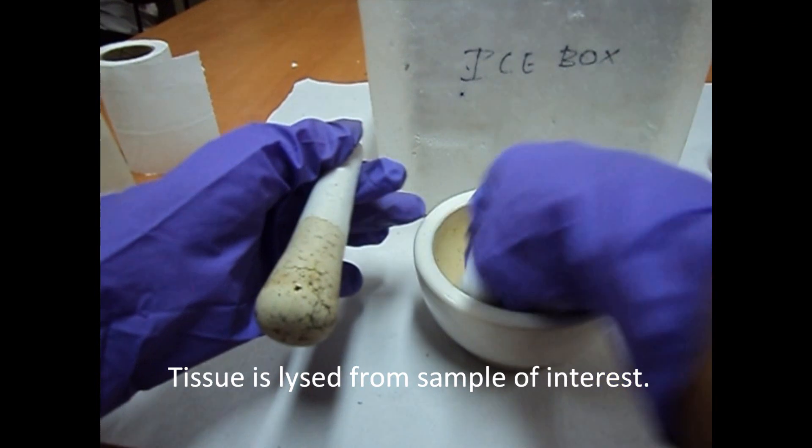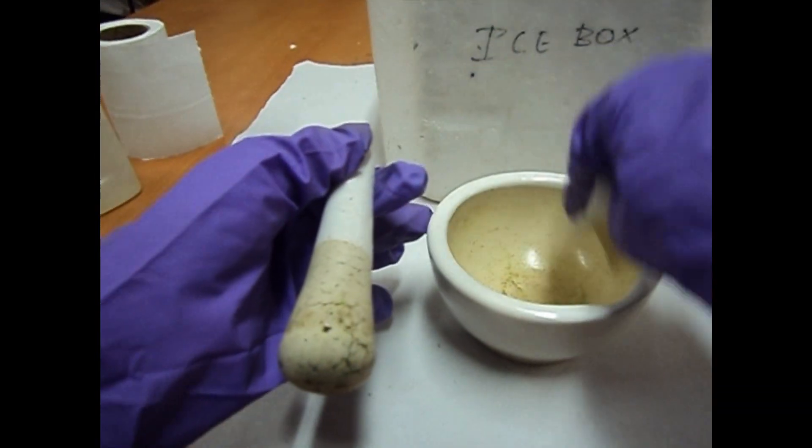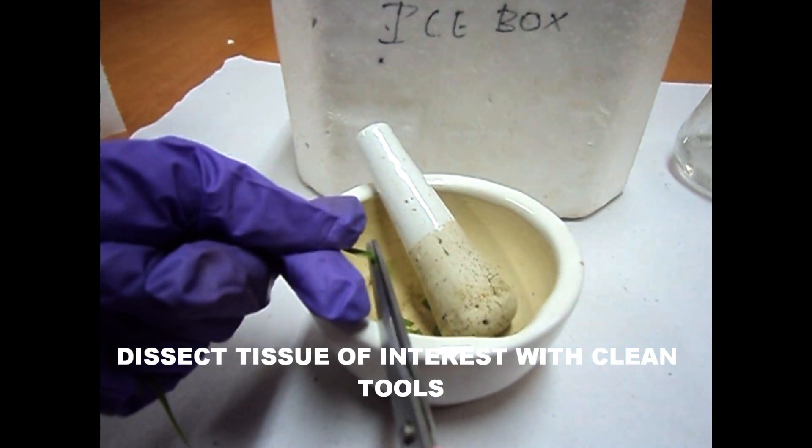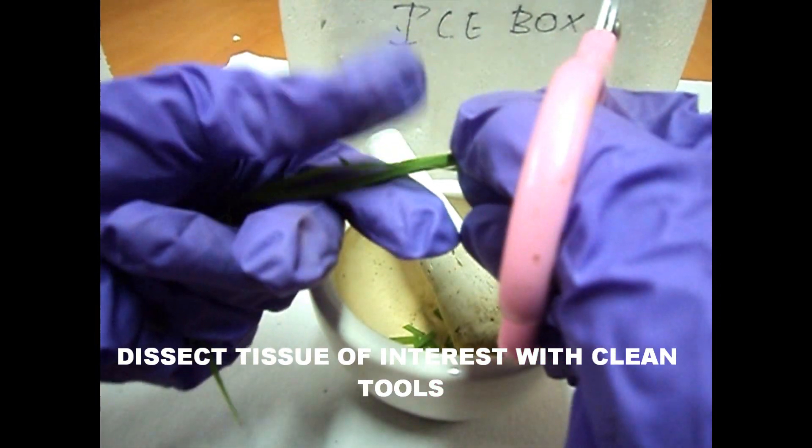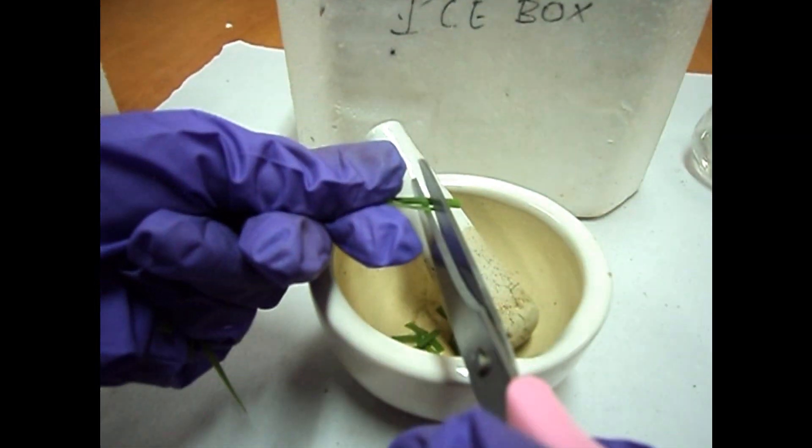Cells and tissues need to be lysed to release the proteins of interest. Preparation of the lysate from the tissues is done by addition of phosphate buffer.